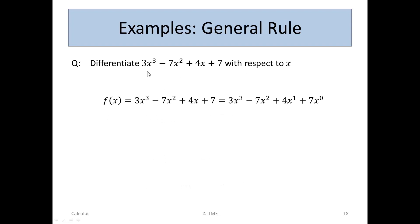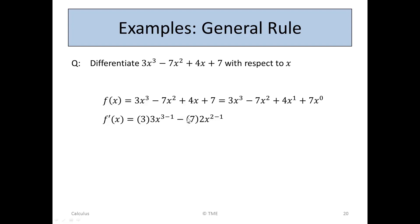Now let's take a general polynomial: 3x cubed minus 7x squared plus 4x plus 7, and differentiate it. Formally, we can write 4x as 4x to the 1, and 7 as 7x to the 0. For the first term, we say 3 times 3x to the 3 minus 1 — the 3 comes down as a multiplier, times x to the 3 minus 1. For minus 7x squared, we get minus 7 times 2x to the 2 minus 1.